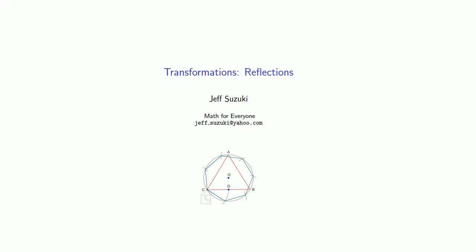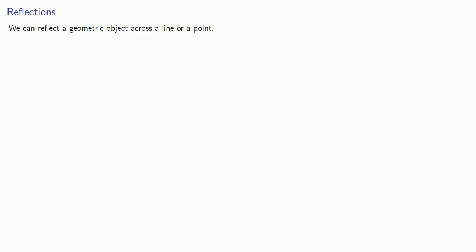Another type of geometric transformation we can apply is a reflection. We can reflect a geometric object across a line or a point. We'll focus on reflecting across the x-axis, the y-axis, or the origin.